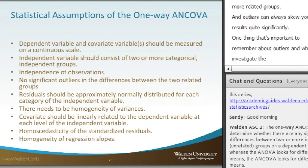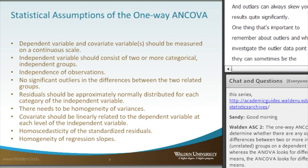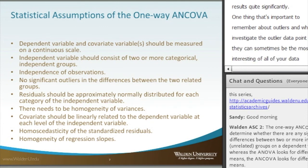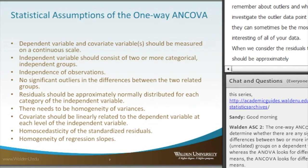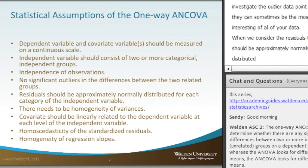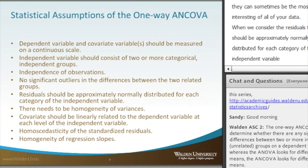When we consider the residuals, they should be approximately normally distributed for each category of the independent variable. And there should, of course, be homogeneity of variances, which you can test with Levene's test.